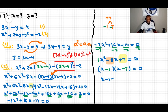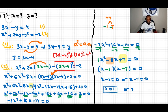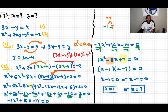This means x minus 1 equals 0 or x minus 7 equals 0. Therefore x equals 1 or x equals 7.